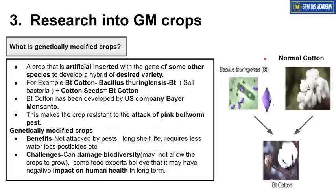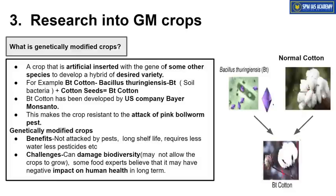The next article is about research into genetically modified crops, important from GS Paper 3 Environment. Genetically modified crops are produced when the seeds of any natural crop are hybridized with genes of a particular kind of bacteria. For example, if we take normal cotton and mix the genes of a bacterium called Bacillus thuringiensis (BT) with it, the resulting crop is called BT cotton — a genetically modified crop.